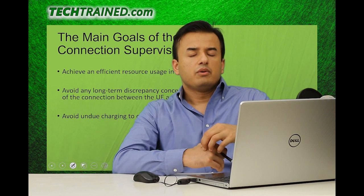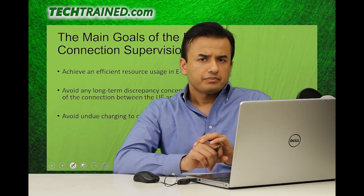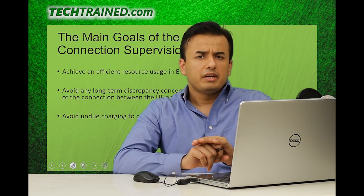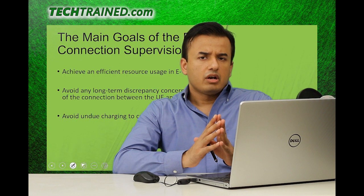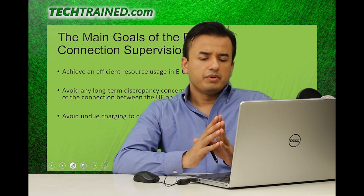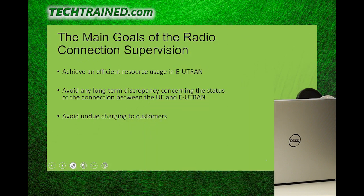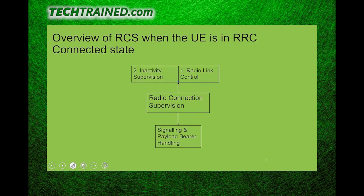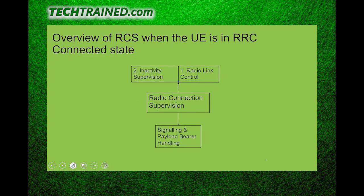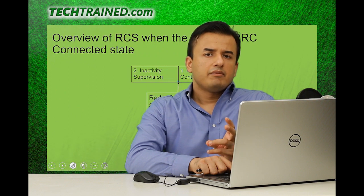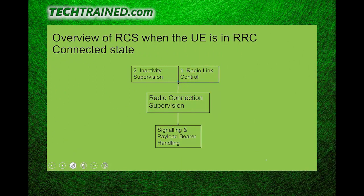Now, what does eNodeB take into account for radio connection supervision? From the eNodeB perspective, there are two mechanisms on the downlink side: radio link control and inactivity supervision. We will explain both of these for the downlink, and then discuss how the UE monitors resources in the uplink.